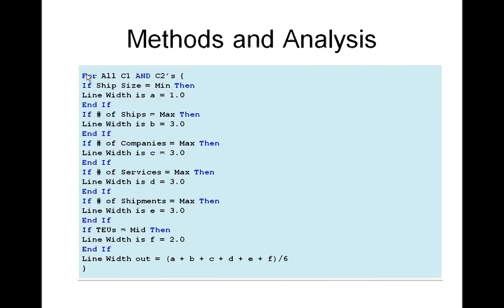As we can see, in programming terms we have a for loop with two countries, one as a source node, the other as a destination node. The nested loops are a series of if statements for evaluating a specific pathway for a given parameter, for example, number of ships.